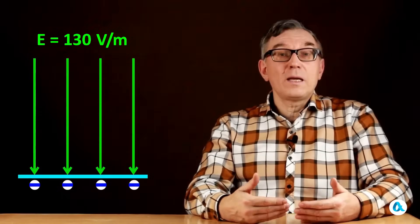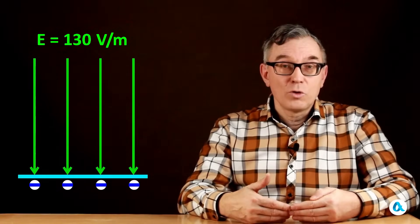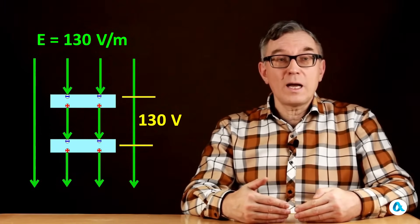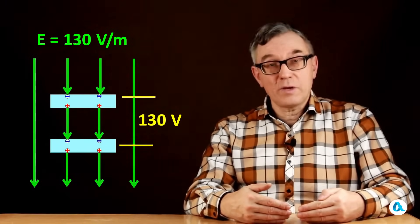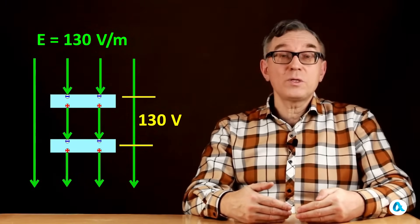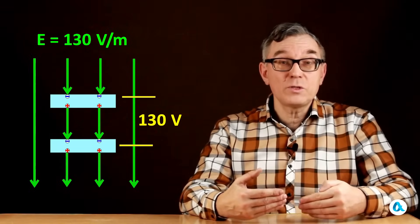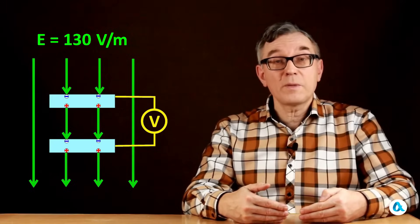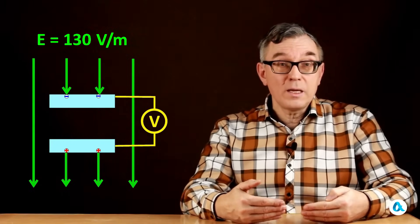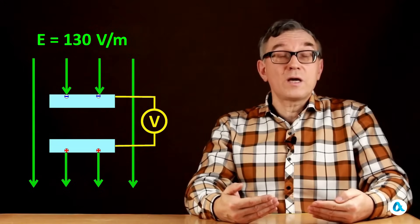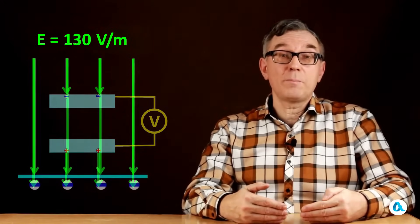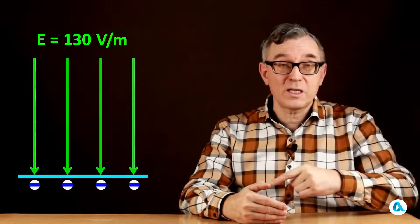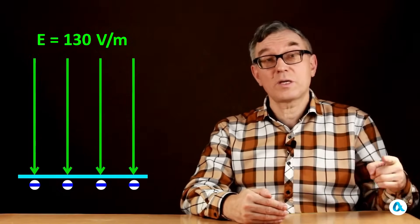But how did they measure this electric field? Of course, we can take two metal plates, separate them by a height of one meter, and a potential difference of 130 volts will establish between them. But how do we measure it? If we connect a regular voltmeter, we won't see anything. The charges will redistribute very quickly and the voltmeter won't have time to show anything. That's why measuring the strength of the Earth's electric field requires other, more sophisticated methods. And now Andre will tell you about them.